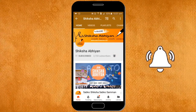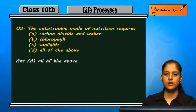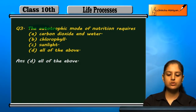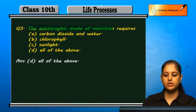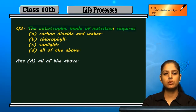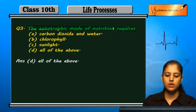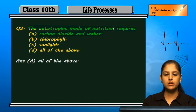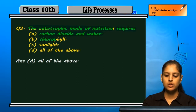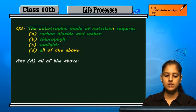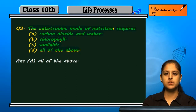Question number three: the autotrophic mode of nutrition requires — carbon dioxide and water, chlorophyll, sunlight, or all of it?